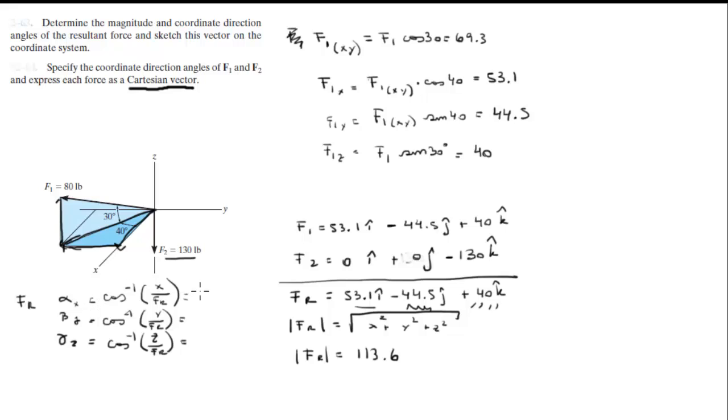And the direction angles should give you 62.13 degrees, 113 degrees, and 142.4 degrees. Don't forget, if the number is negative, put the negative sign, otherwise you're going to get the wrong angle. So this is for the resultant force.